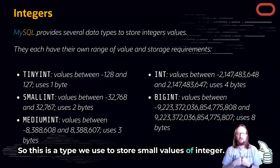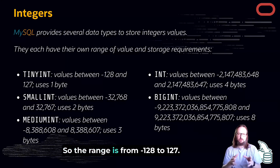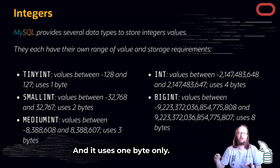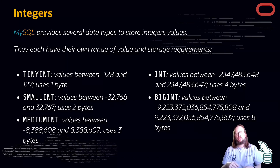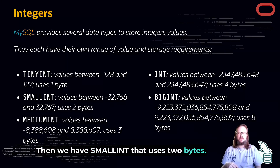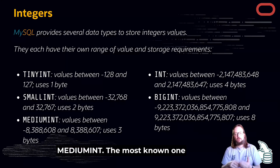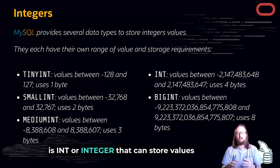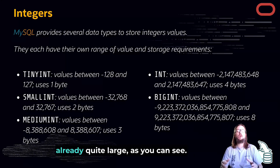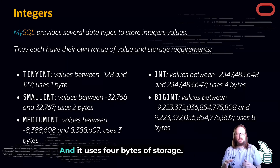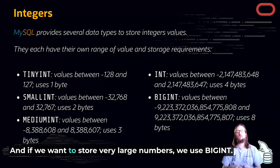TINYINT is used to store small integer values; the range is from minus 128 to 127, and it uses only one byte. Then we have SMALLINT, which uses two bytes, and MEDIUMINT. The most well-known one is INT or INTEGER, which can store already quite large values and uses four bytes of storage.